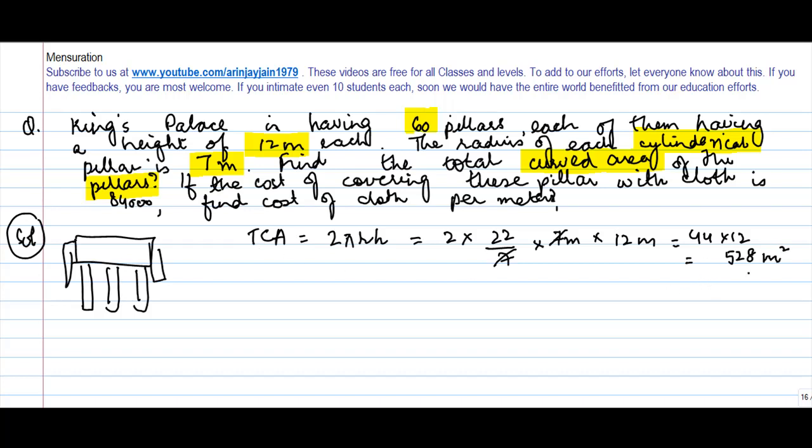The total curved area is 528 square meters. Now let's see the second part: if the cost of covering these pillars with cloth is 84,000, find the cost of cloth per meter. We are told that the cost of covering 60 pillars is 84,000.